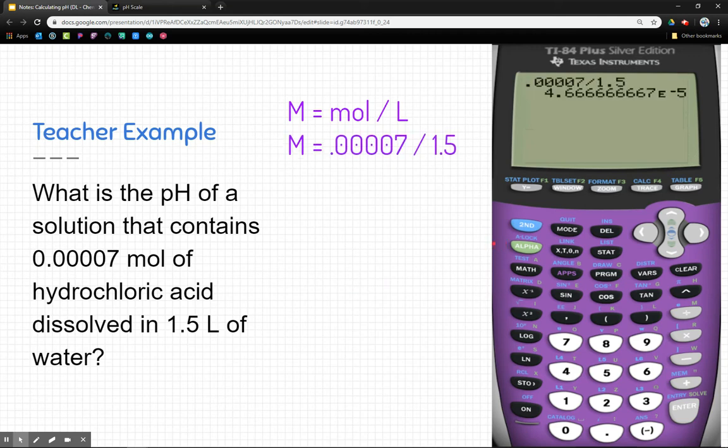So plugging that into my calculator, 0.00007 divided by 1.5, that's going to give me this number in scientific notation, 4.7 times 10 to the negative 5. So remember, molarity is concentration, and this is the concentration of the acid. So we're getting one step closer to our pH.